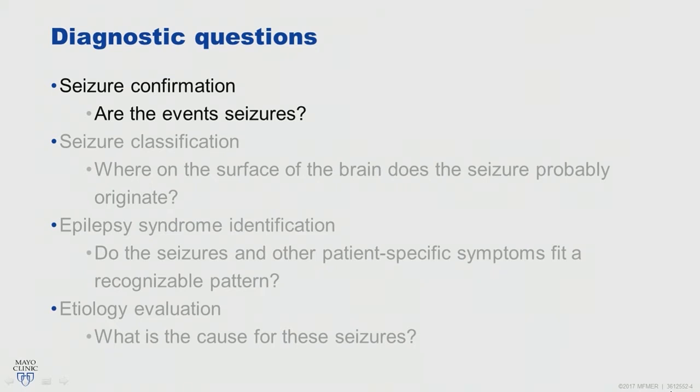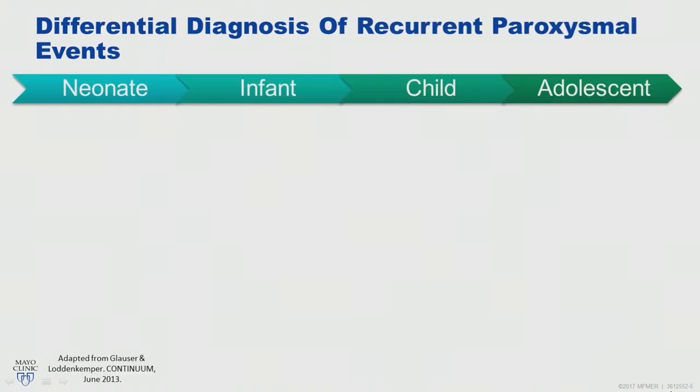Stopping at an epilepsy diagnosis is not enough, because based on seizure and other patient-specific symptoms, an epilepsy syndrome diagnosis can direct optimal treatment, assist with etiology evaluation, and help give a more accurate prognostic picture for the patient and for the family. So in the evaluation of a child with recurrent paroxysmal events, it is important to have a differential diagnosis of non-epileptic spells.